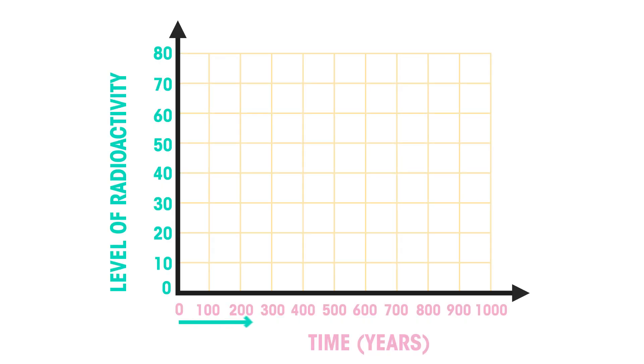Radioactive waste can remain hazardous for a very short or a very long period of time, depending upon the different half-lives. Half-lives mean the level of hazard of the radioactive waste reduces with time. To learn more about half-lives, watch this video.